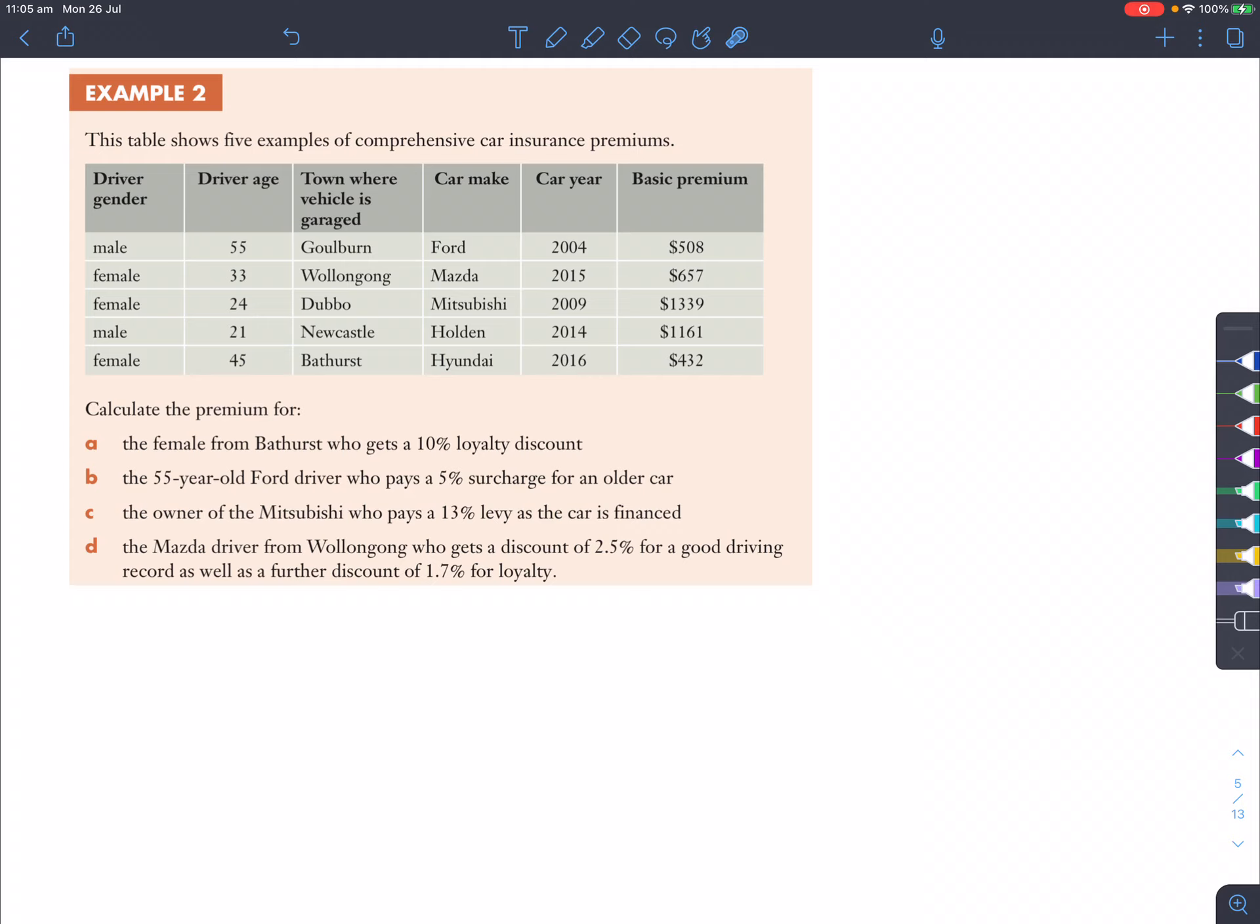Let's have a look at example two. So this table shows five examples of comprehensive car insurance premiums. There's a variety of genders here, ages here, town where the vehicle's garaged, car make, which is the brand, year that it's produced, and its premium, which is the price.